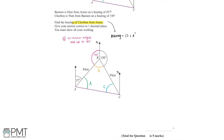The next angle we can find is the orange angle labelled B. We know that angles around a point add up to 360 degrees, and so angle B is equal to 360 take away (150 plus 143), which is equal to 67 degrees.